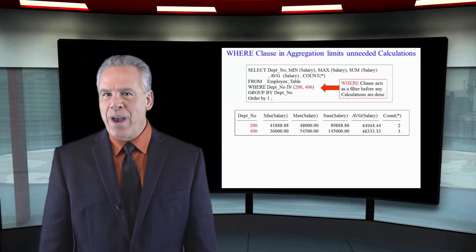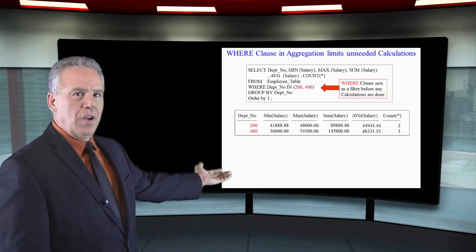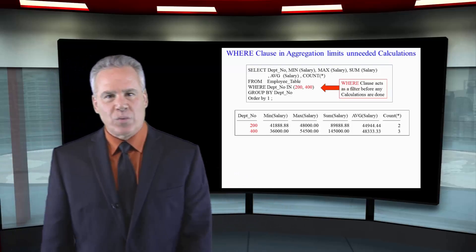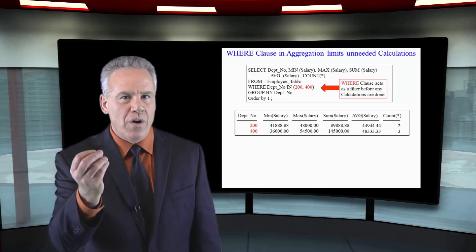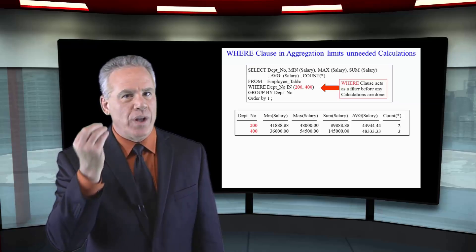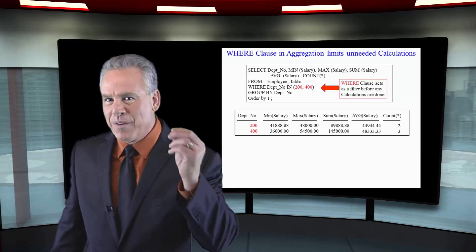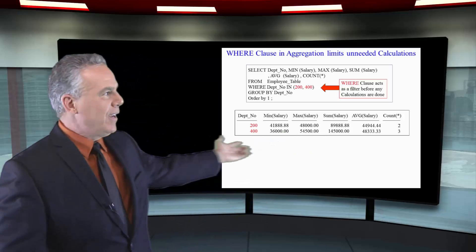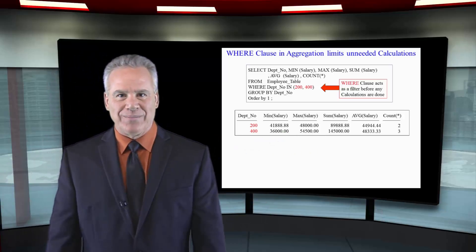As you can see here, here are our results. We got two rows — of course we did — because we're going to get one row per department. We want department 200 and department 400, and that's the only thing coming back on the report.